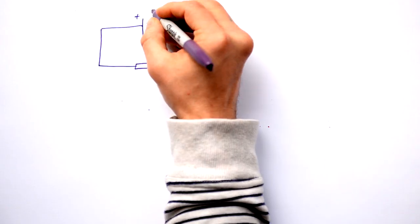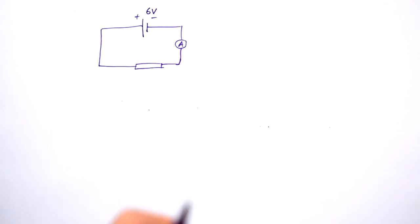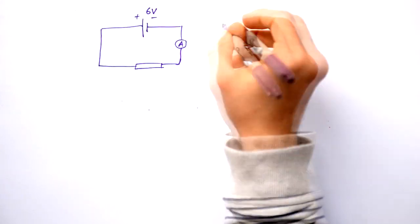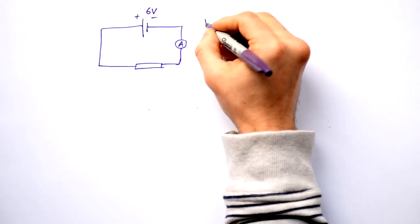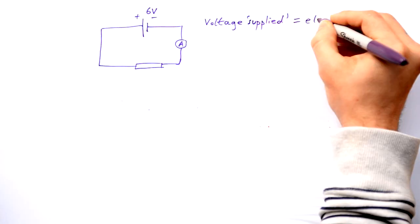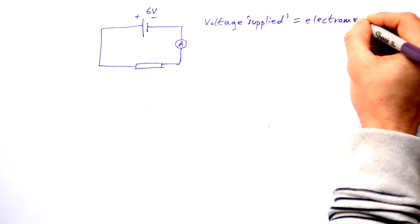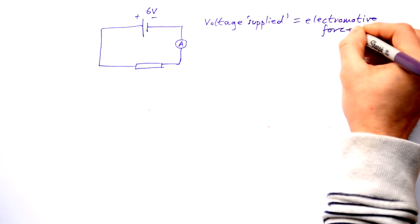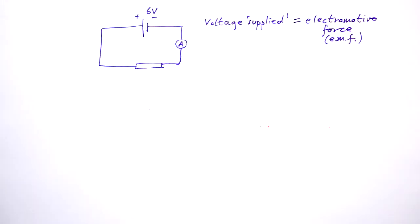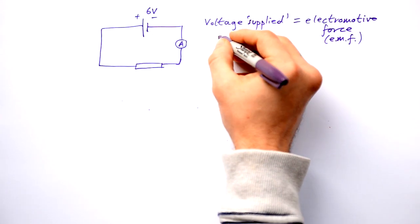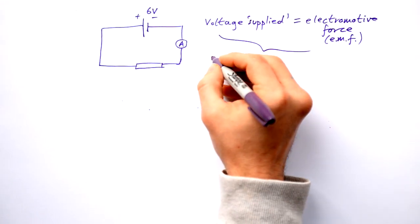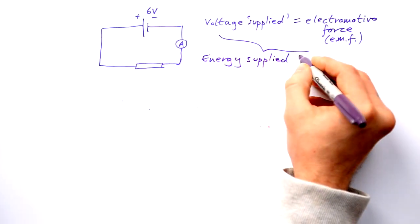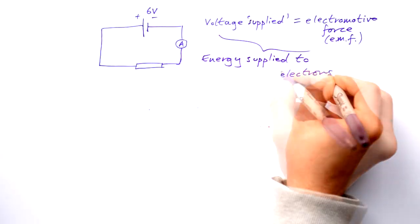Now let's say that this battery says six volts. Now what on earth does that mean? Well, technically we could say that voltage supplied is the same thing as something that we call electromotive force or EMF for short. In other words, it's the amount of energy supplied to electrons.